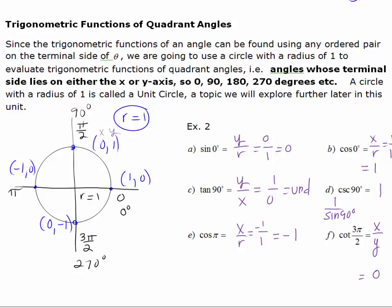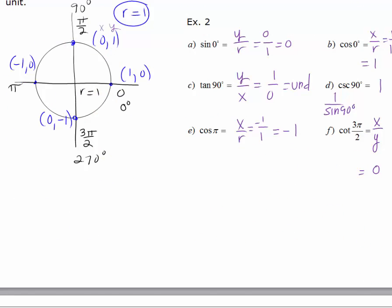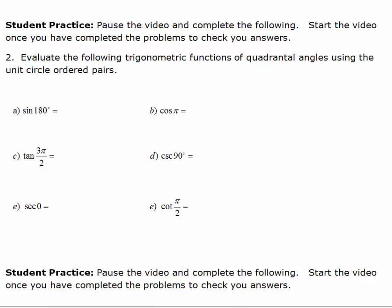We have the two special triangles — the 45-45-90 and the 30-60-90 — that help generate trig functions of special angles. Now we have another trick: we can generate trig functions of any quadrant angle using the ordered pairs 1, 0 — 0, 1 — negative 1, 0 — and 0, negative 1. This holds no matter how many times we rotate around the circle. At 360 degrees or 2 pi we use 1, 0 again, and at 450 degrees we still use 0, 1. Pause the video and use the unit circle with those four special points to generate the trig functions of the given quadrant angles.